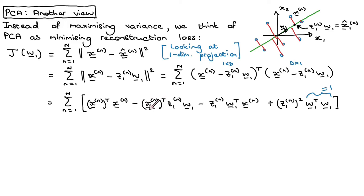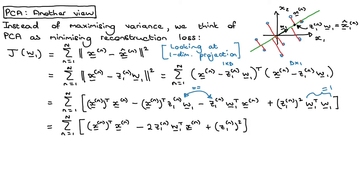The other thing to note is that we have a 1-by-d vector multiplied by a d-by-1 vector, so that whole thing is a scalar. Similarly another term is a scalar, which means I can take the transpose of either one and get the same result. So that term and this term are actually equal, allowing further simplification. And this expression here is actually just z1n, so we can simplify even further.